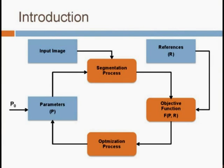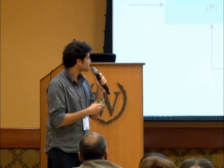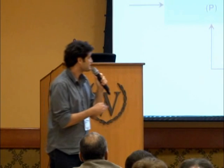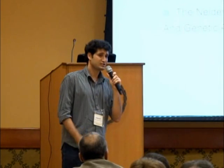This is the framework we are working with. We have some initial parameters, and together with an input image, we try to segment the image. Then with the result of the segmentation, we compare with some reference — the desired outcome — and apply an objective function to give a numerical value of how good the segmentation was. The optimization process then tries to provide new parameters to improve the segmentation. The objective is to assess derivative-free optimization methods for automatic adaptation of segmentation parameters, analyzing accuracy and computational cost. The methods used were the Generalized Pattern Search (GPS), the Mesh Adaptive Direct Search (MADS), and the Nelder-Mead, using the genetic algorithm as benchmark.